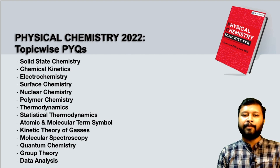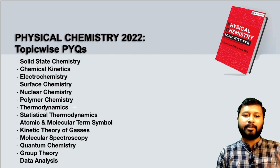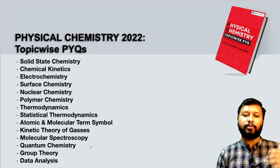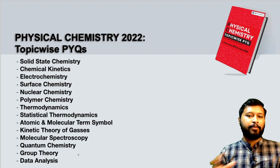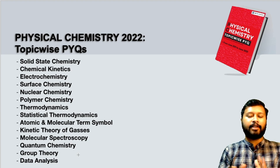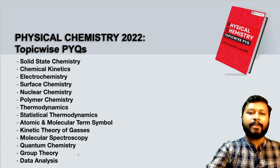The third ebook is physical chemistry — again topic-wise previous year questions. The chapters are: solid state chemistry, chemical kinetics, electrochemistry, surface chemistry, nuclear chemistry, polymer chemistry, thermodynamics, statistical thermodynamics, atomic and molecular term symbols, kinetic theory of gases, molecular spectroscopy, quantum chemistry, group theory, and data analysis. We have covered every topic of physical chemistry, and questions and solutions are separated here as well, accessible with the help of bookmarks.